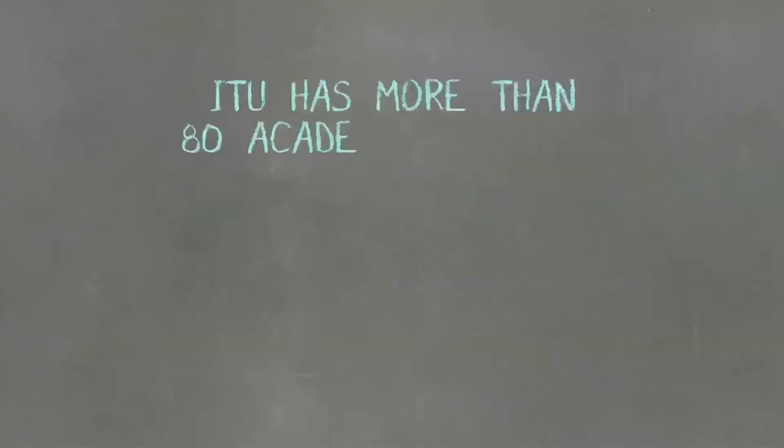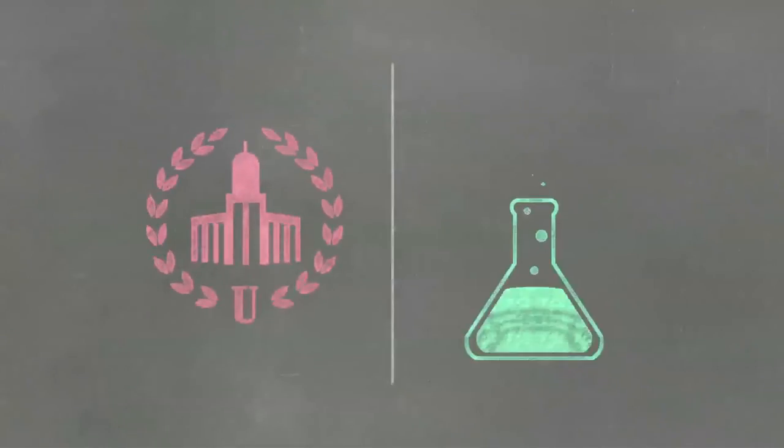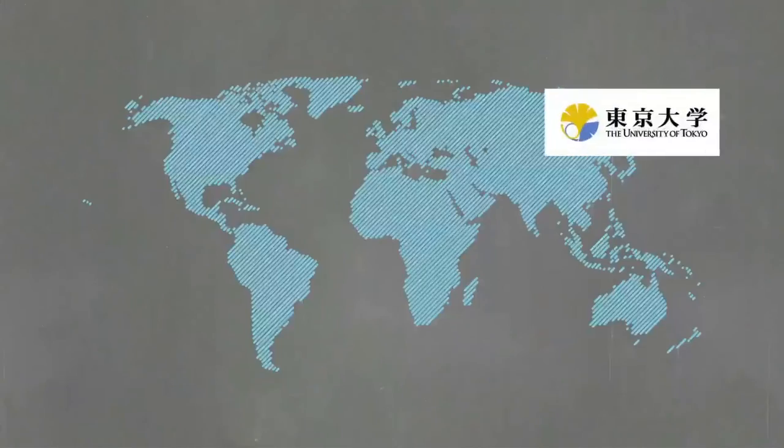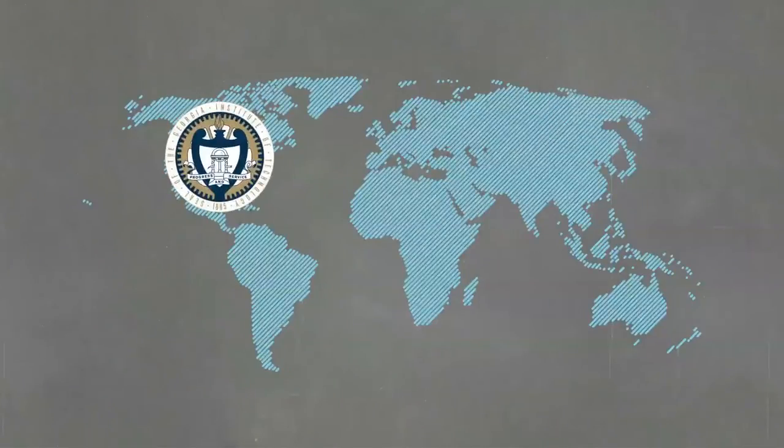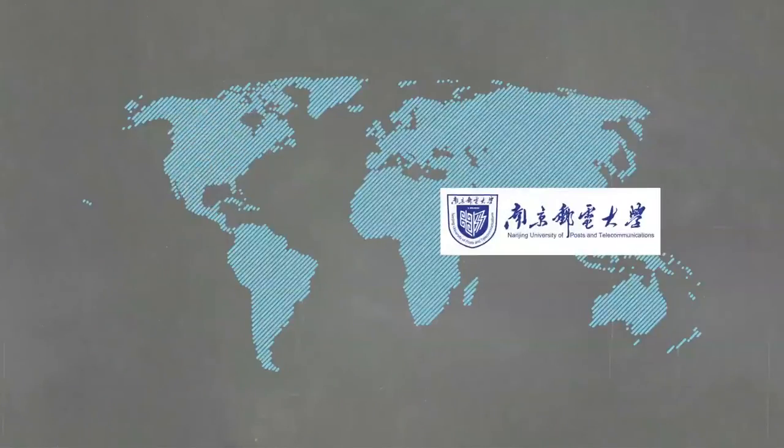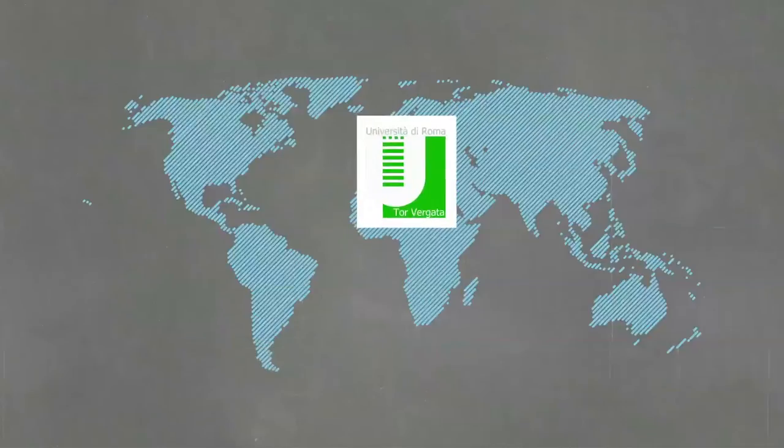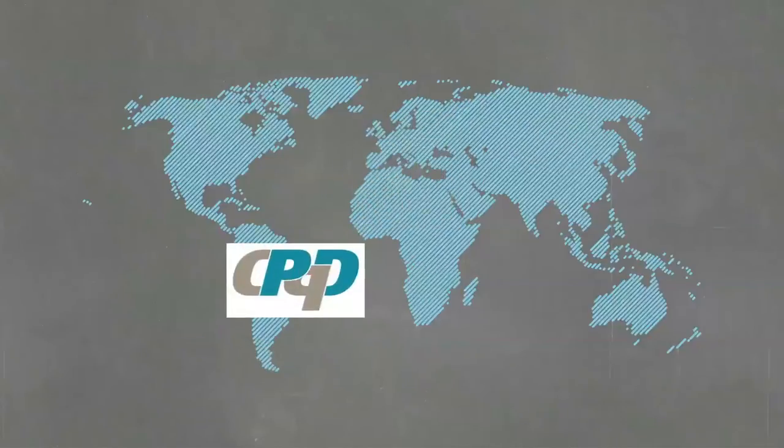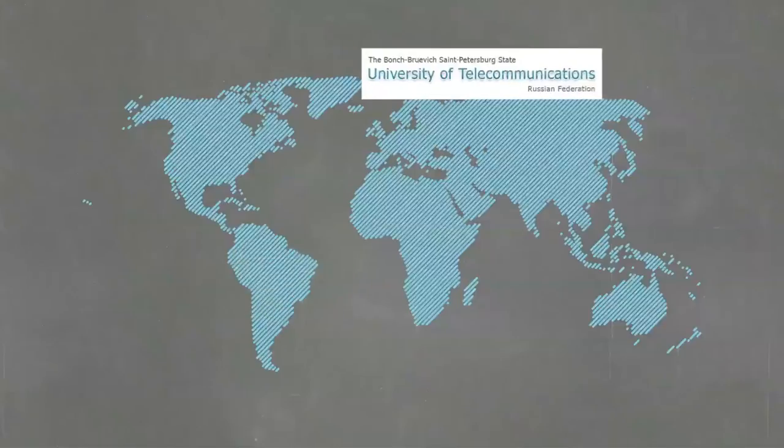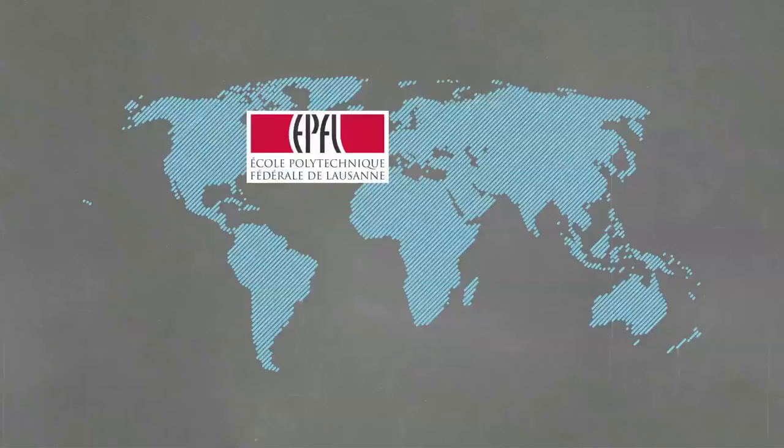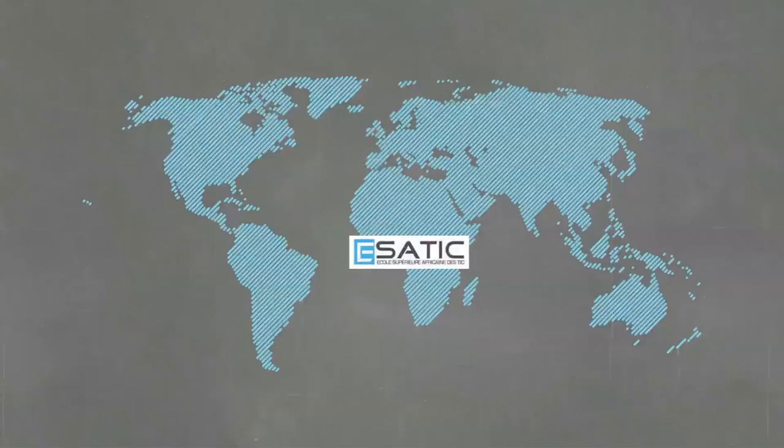ITU has more than 80 academia members from all over the world including universities and research centres such as the University of Tokyo, Japan, Georgia Institute of Technology, USA, Nanjing University of Post and Telecommunications, China, Universidad Tecnológica Nacional, Argentina, Tor Vergata, Italy, CPQD, Brazil, St. Petersburg State University of Telecommunications, Russian Federation, EPFL, Switzerland, Ecole Supérieure Africaine des Tays, Côte d'Ivoire, and many more.